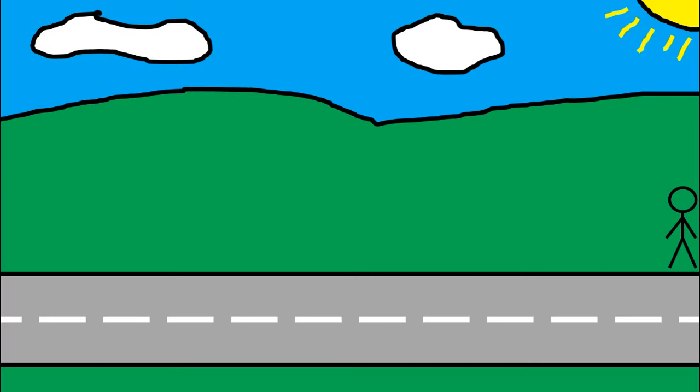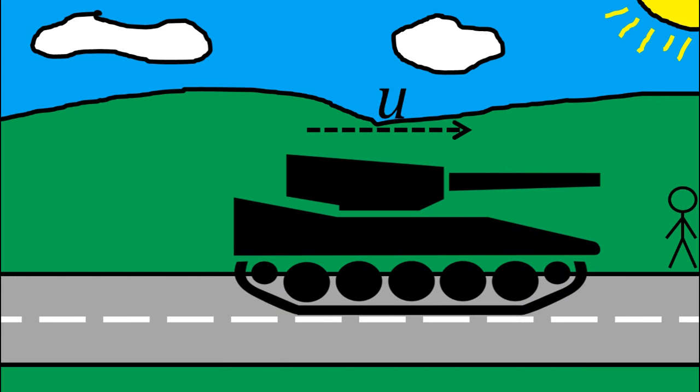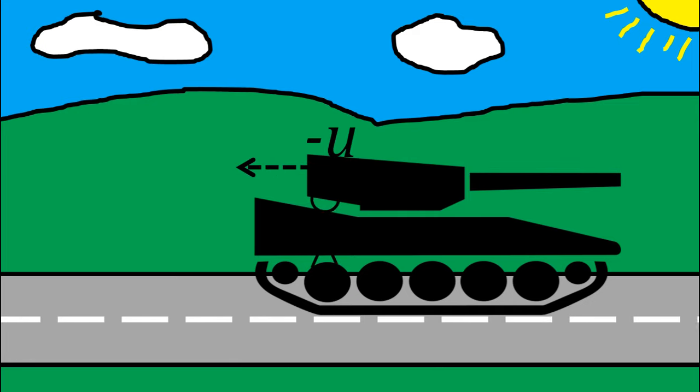Let's take a closer look at different frames of reference. Imagine a tank driving along a road. From the frame of reference of the road, the tank is moving with a constant velocity, let's call it U. However, for the tank driver, the tank is stationary and the road is moving backwards with velocity minus U. Both of these points of view are valid inertial frames.